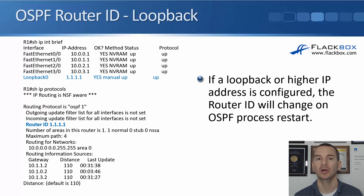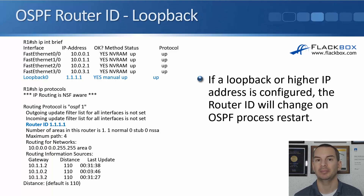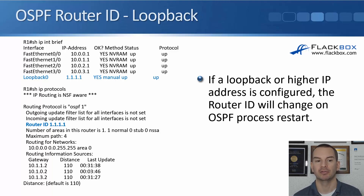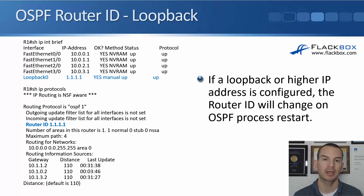In the next example, we do show IP interface brief and this time we do have a loopback interface. We've got loopback 0 with IP address 1.1.1.1. So even though it's lower than the physical addresses, because it's a loopback it's going to be preferred as the router ID. Again, we can verify that with the show IP protocols command.